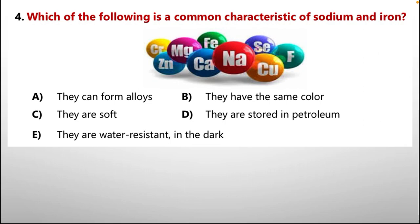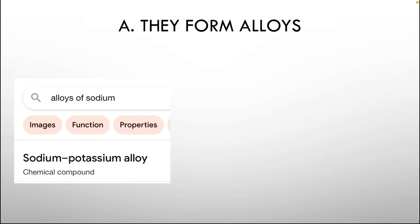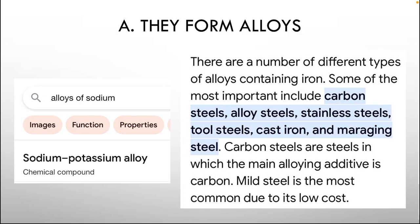Question 4: Which of the following is a common characteristic of sodium and iron? Options: A: they can form alloys, B: they have the same color, C: they are soft, D: they are stored in petroleum, E: they are water resistant in the dark. Analyzing option A — sodium forms a sodium-potassium alloy, and iron forms numerous alloys including carbon steels, alloy steels, stainless steels, tool steels, cast iron, and maraging steel. So option A is correct because both sodium and iron form alloys.